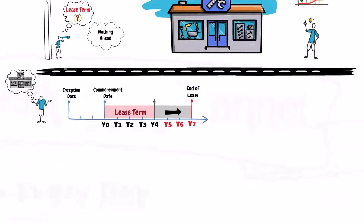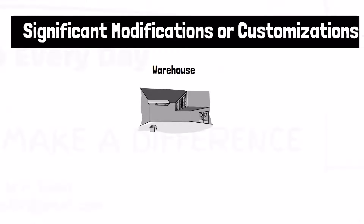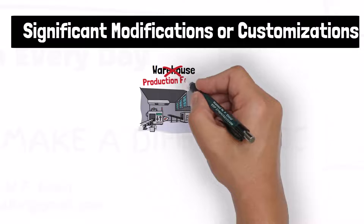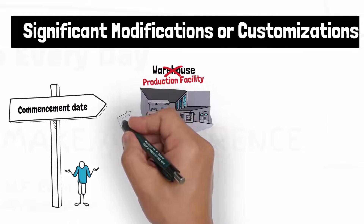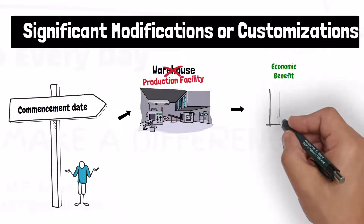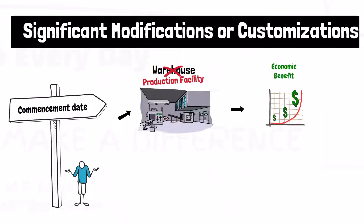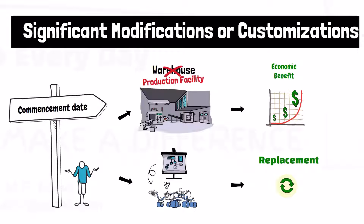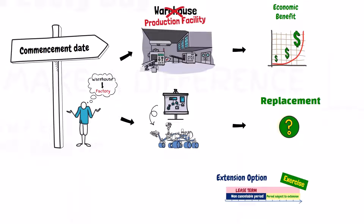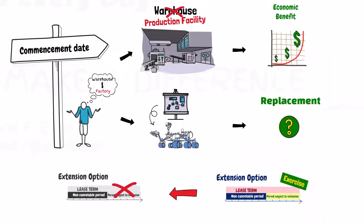Another example is a significant modification to, or customization of, the underlying asset that was not anticipated on the commencement date. This modification is expected to generate significant economic benefits for the lessee, or might make the asset so specialized that a replacement might not be found easily. Had the lessee known about that modification from the beginning, they would have considered an option to extend the lease term that was not considered when assessing the lease term on the commencement date.